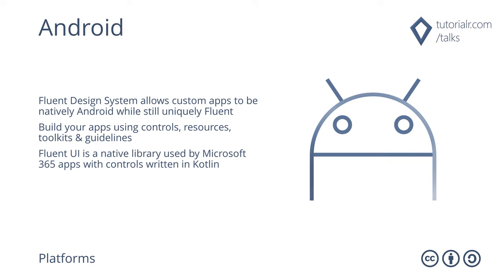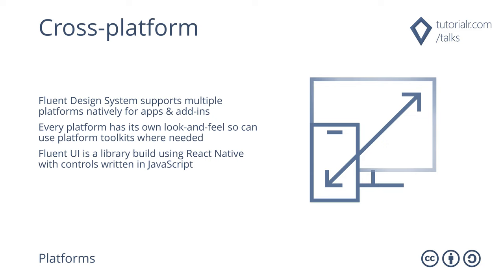Fluent Design System allows you to build cross-platform apps and add-ins that work across multiple platforms natively. Every platform has its own look and feel, and can reference each platform's toolkit when deciding how to build apps. Fluent UI React Native is a library built using JavaScript and React Native components, with a library of controls written in JavaScript, currently supporting Windows and macOS, but with iOS and Android support coming soon.